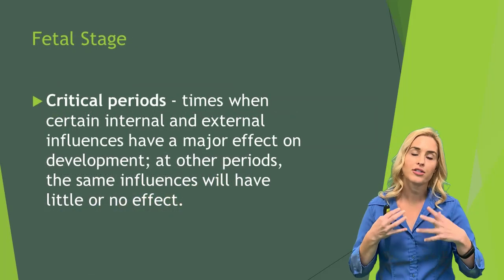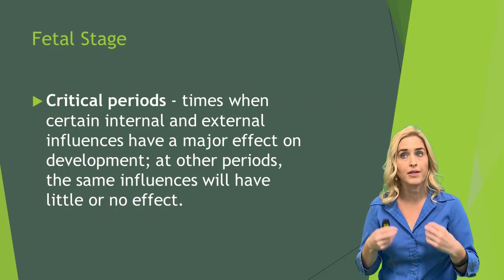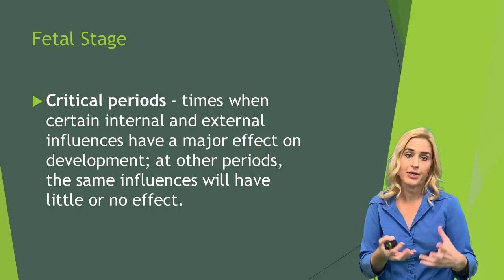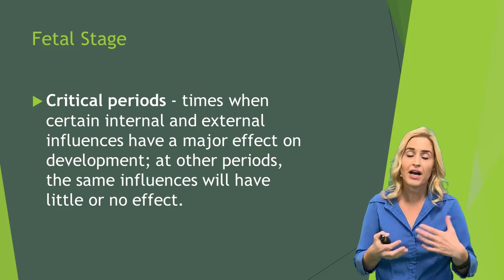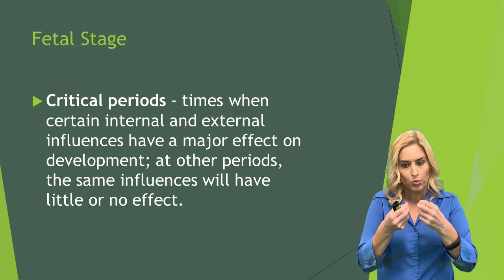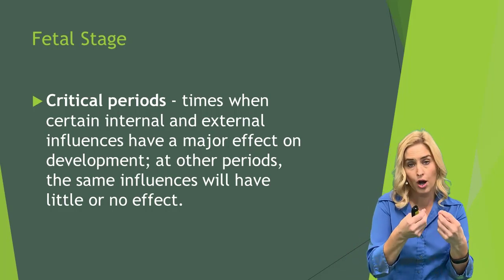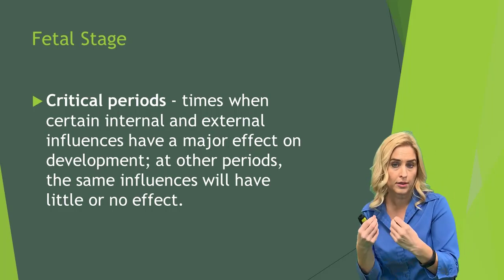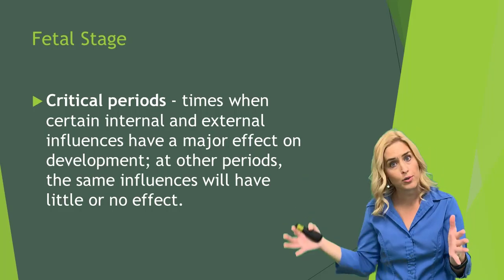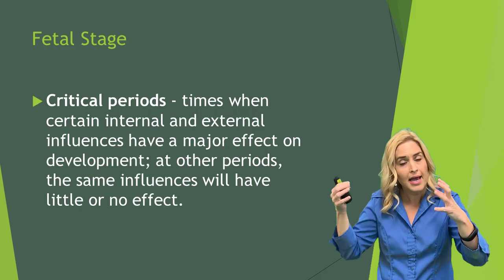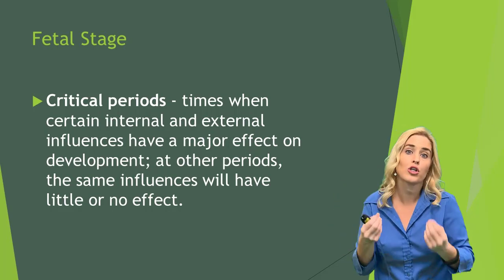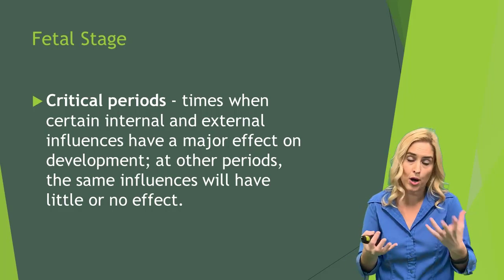Critical periods are times in our development when internal and external influences can have major effects on our development, and at other periods of time those same influences will have little or no effect. What's interesting is that we know there are critical periods for the heart and critical periods for the lungs. And the brain — that critical period is pretty much throughout the entire pregnancy, where internal and external influences can really impact the formation and functioning of these internal as well as external parts of our bodies.